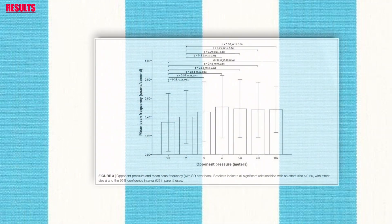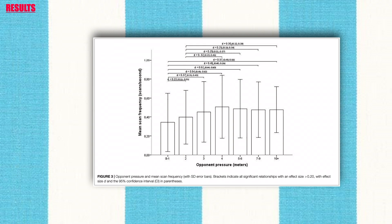Regarding opponent pressure and scan frequency, scan frequency appears relatively low in situations where opponent pressure is high, and progressively higher when pressure is lower, until the closest opponent is about 4 metres away, where a further increase in distance is not associated with an increase in scan frequency. A Kruskal-Wallis test showed the difference for pressure is significant. Post-hoc pairwise tests showed that the two highest degrees of pressure differ from each other and from all other degrees, the third highest differs from all except the 7–9 metre range, and the four lower degrees differ only from the three highest.